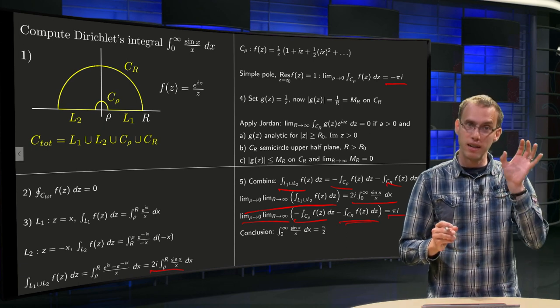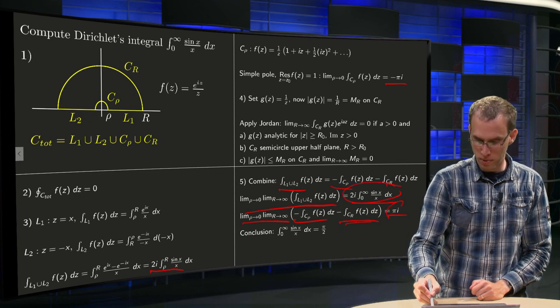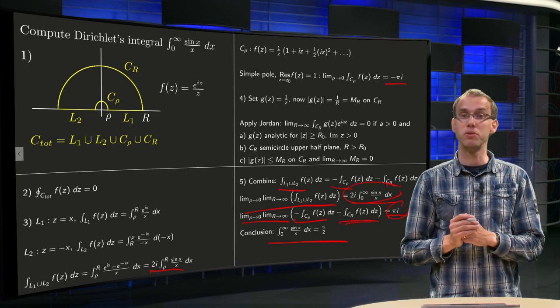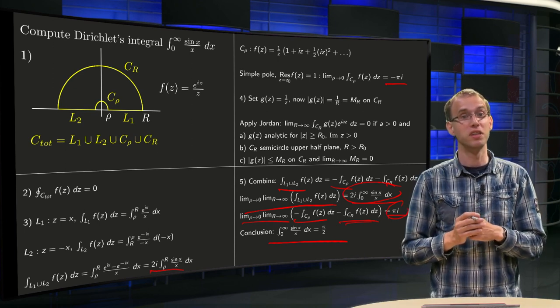So we get a minus minus pi i equals pi i. So if we combine left hand side equals right hand side, we get 2i times our integral equals pi i, or our integral from 0 to infinity equals pi over 2. And there we have the result of Dirichlet's integral.